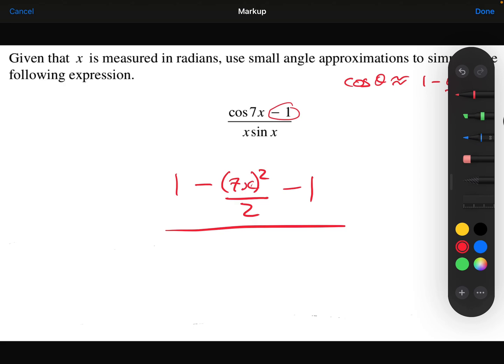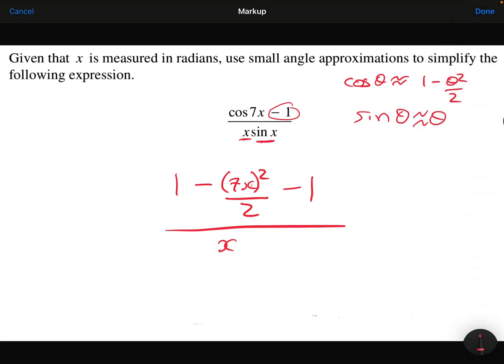Then on the denominator here, I've got an x. Well there's no trigonometric function there, so that can just stay as an x. And then I've got the sin x, which I know can be approximated just to be x. So let's simplify this then.